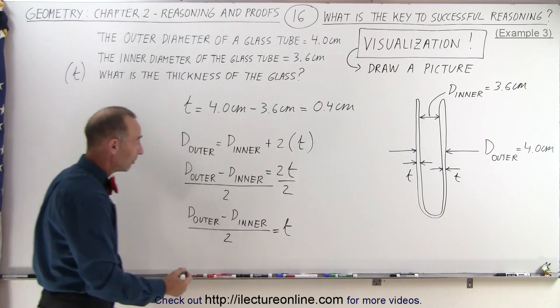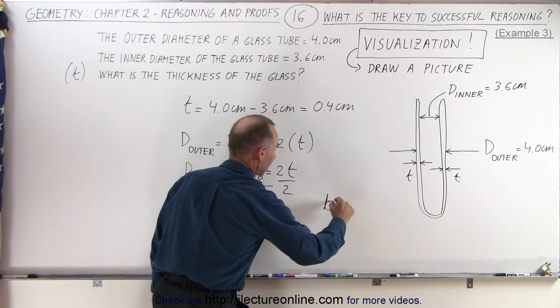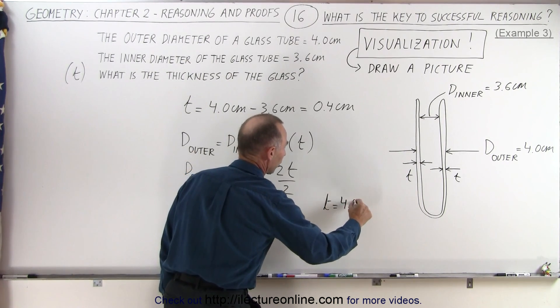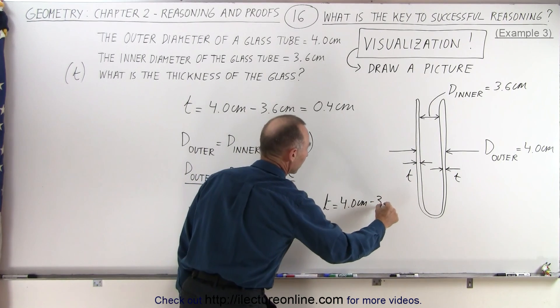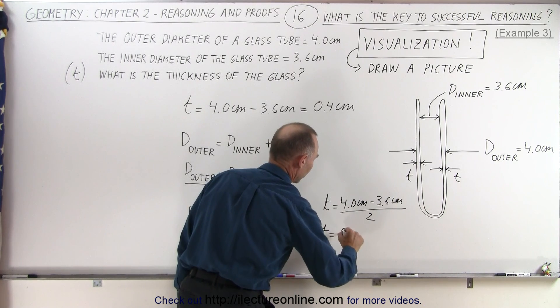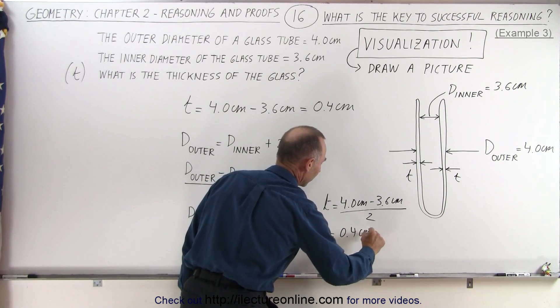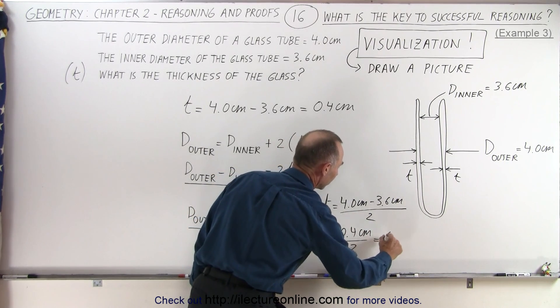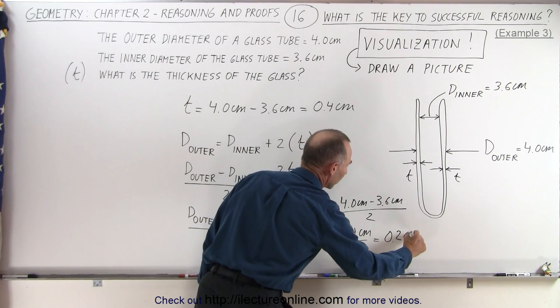And then, when we calculate it, we get the following. We can see, therefore, that T is equal to 4.0 centimeters minus 3.6 centimeters divided by 2, which is equal to 0.4 centimeters divided by 2, which is equal to 0.2 centimeters. That's a decimal right there.